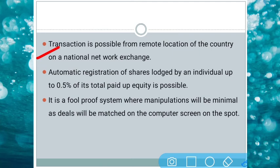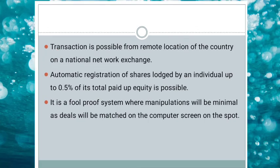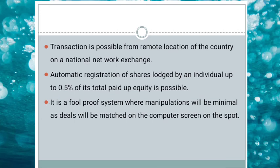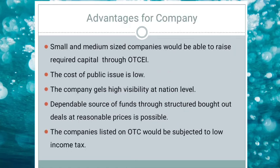A person can make any kind of trade from a remote place situated in any city. Automatic registration of shares lodged by an individual up to 0.5% of his total paid equity capital is also possible. It is also a foolproof system where manipulation is minimum, as it is computerized and regulated. The orders of buyer and seller can be randomly matched on a computer screen, which reduces the chances of manipulation.